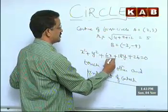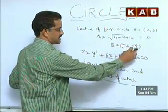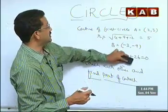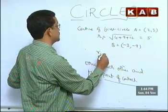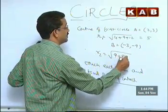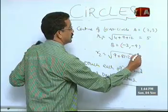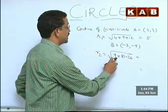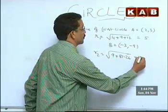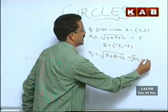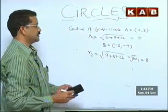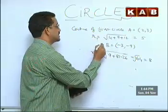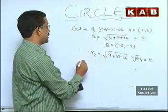For the second circle, the center is B = (−3, −9) — you already know it's (−g, −f), half of each coefficient. The radius r2 = √(9 + 81 − 26) = √64 = 8. So we have both circles: their centers and radii.